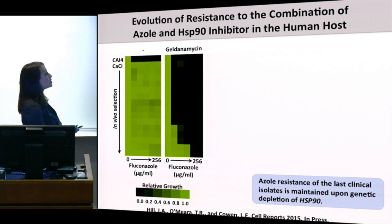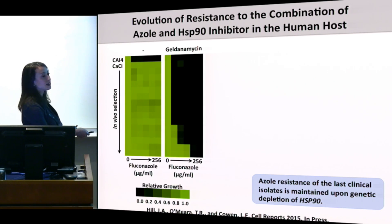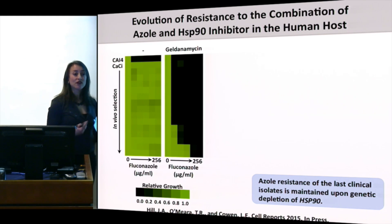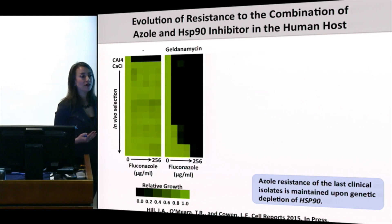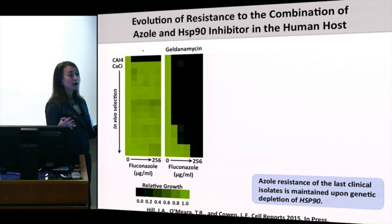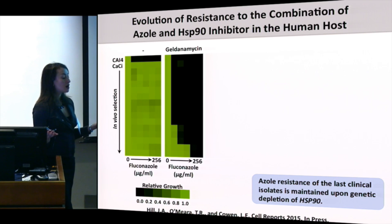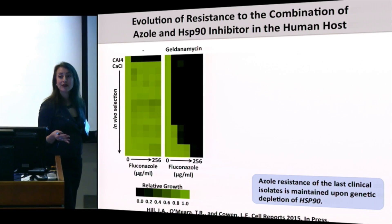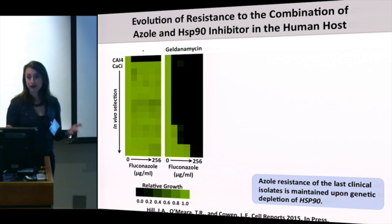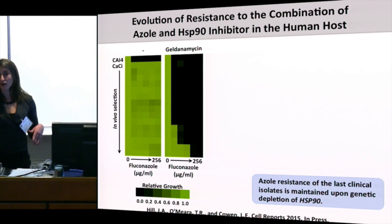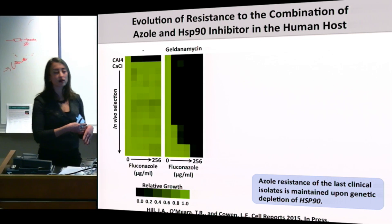Genetically reducing Hsp90 in these strains completely recapitulates these effects — these isolates have evolved an azole-resistant phenotype that is partially independent of Hsp90. Our real question was the fitness consequence, since resistance persisting in a pathogen population depends on how fit resistant pathogens are. If resistance is very costly and these organisms have a major disadvantage in the absence of drug, they're unlikely to be a major problem — they'll get out-competed by sensitive counterparts.